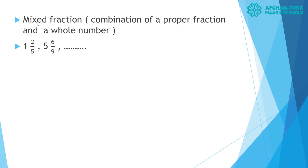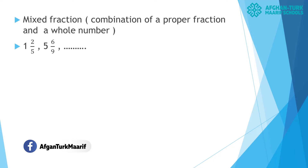The third type of fraction is mixed fractions. Mixed fractions — as the name explains — are a combination of a proper fraction and a whole number. Like these examples: here we have one whole number and a fraction. The combination of these two is called mixed fractions, and we read them like '1 and 2 upon 5' or '5 and 6 upon 9.'